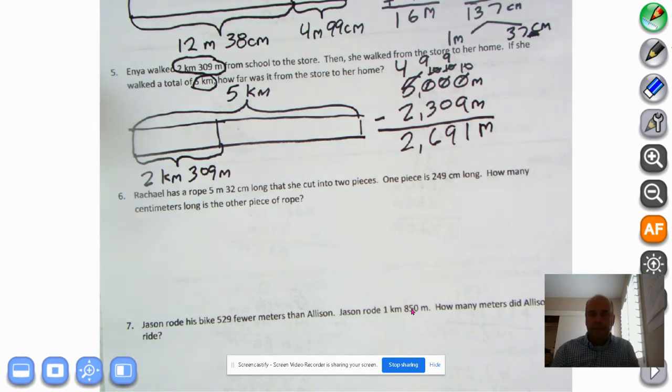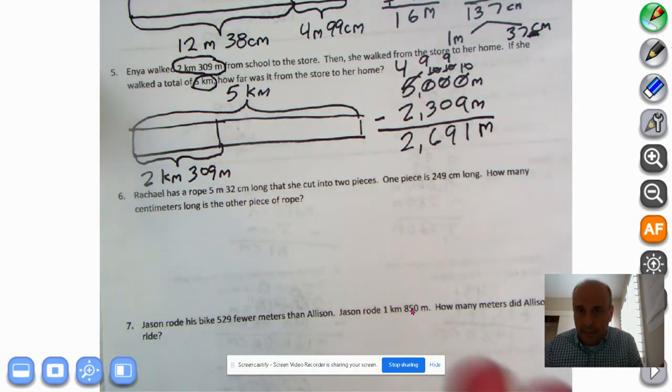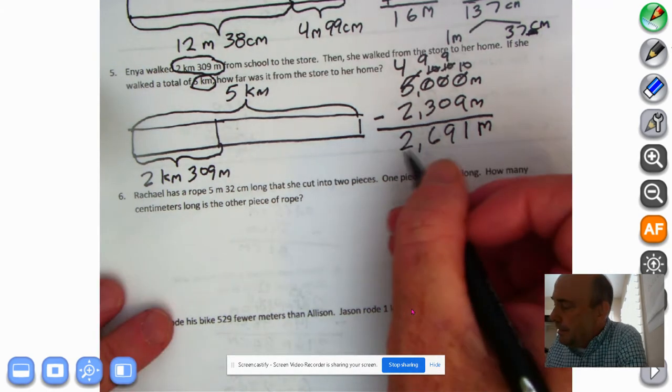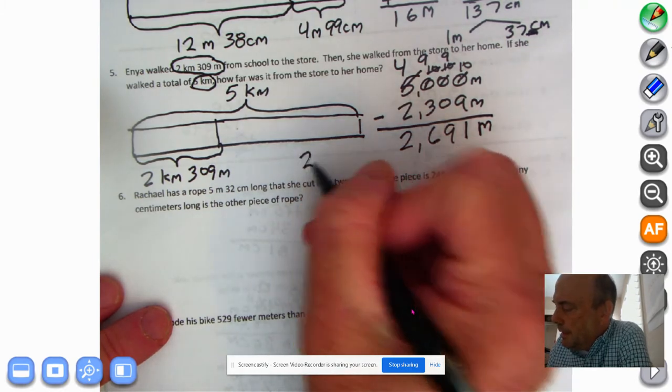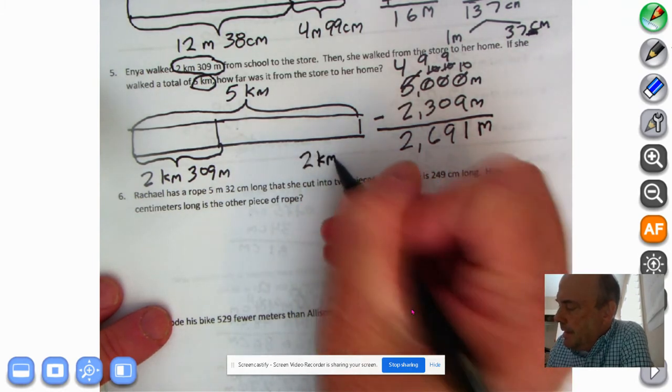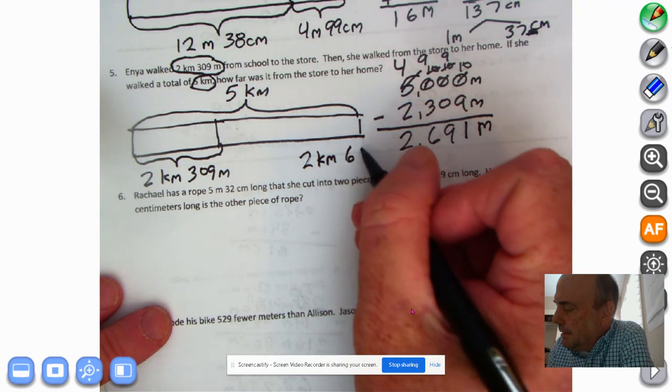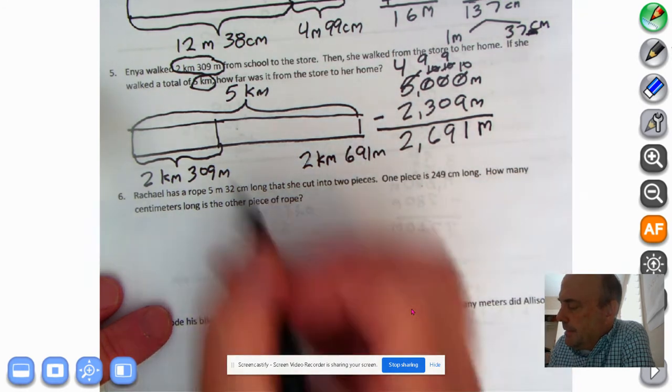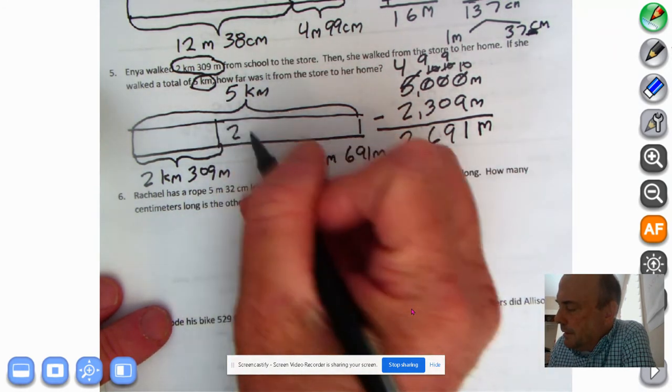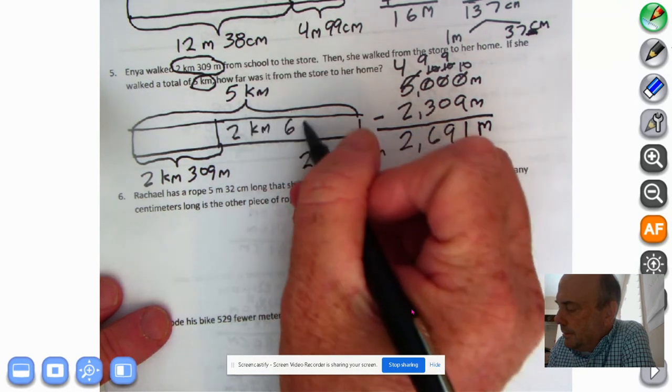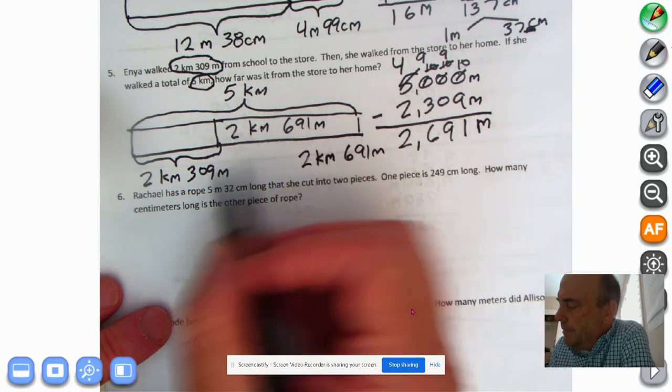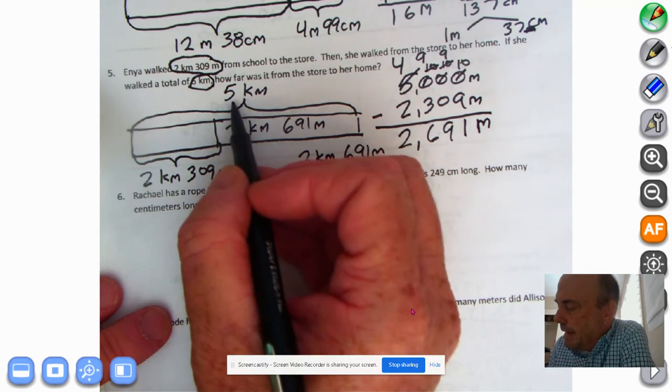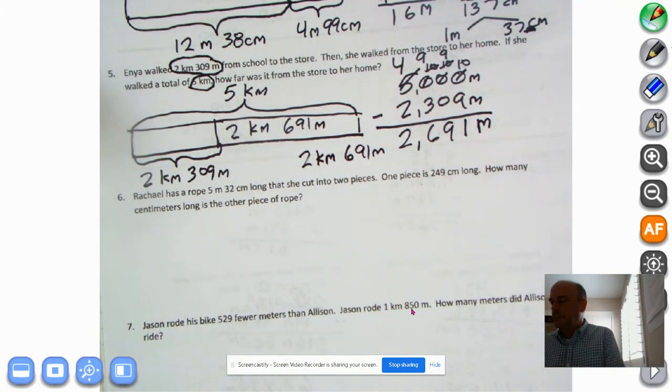However, we need to write this in kilometers because that's a lot of meters. So how many kilometers would be in here? Well, if you said 2 kilometers and 691 meters, you'd be absolutely correct. And that's the amount that goes here. 2 kilometers, 691 meters. Add those together, we get 5 kilometers. It's true.